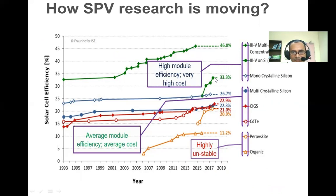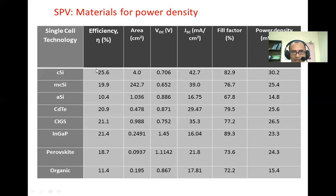Looking at the efficiency progression: single crystalline silicon shows advancement, then multi-crystalline silicon, cadmium telluride, and eventually it trends lower toward organic materials. The reason organic materials perform much lower compared to advanced inorganic materials or even silicon is that silicon achieves higher current density and therefore greater power density. The difference between single and multi-crystalline silicon lies in their crystalline properties, and cadmium telluride and thin films also achieve relatively good performance.